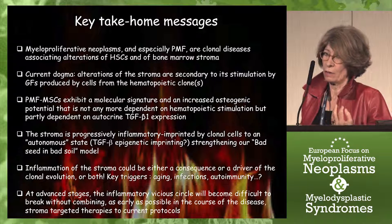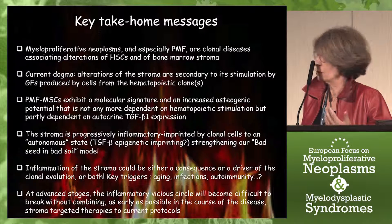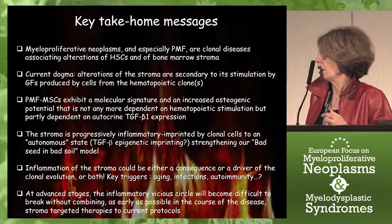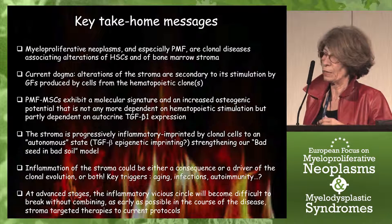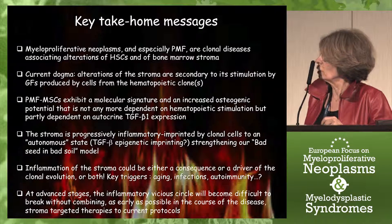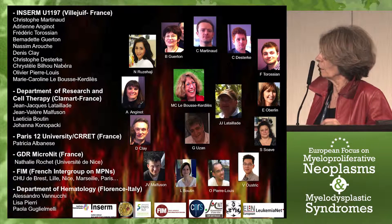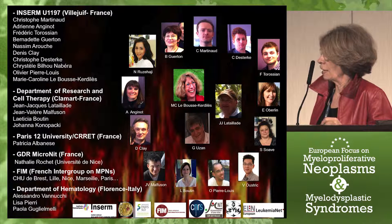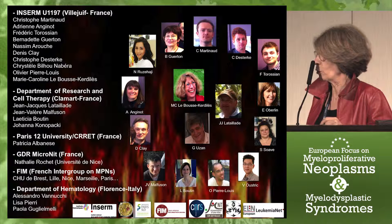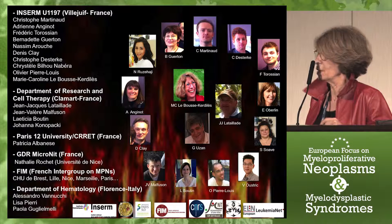The key triggers could be either aging, inflammation, or autoimmunity — the question is still open. But at advanced stage, the inflammatory vicious circle will become difficult to break without combining, as soon as possible during the course of disease, stroma-targeted therapy with current protocols targeting essentially hematopoietic stem cells. I would like to finish by thanking all my collaborators in my team at Villejuif and all collaborators with whom I have been working for a long time, especially the French group on myeloproliferative disorders and the team of Alessandro Vannucchi for providing bone marrow biopsies from patients, with specific thanks to Lisa and Paola. Thank you very much for your attention.